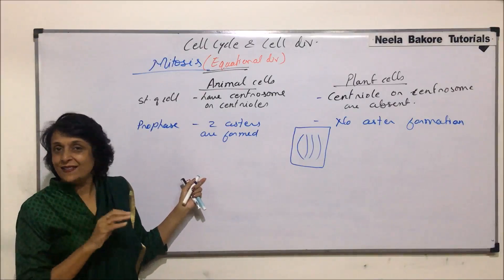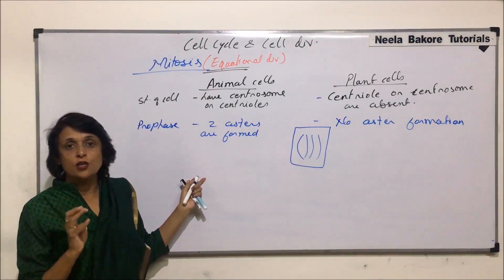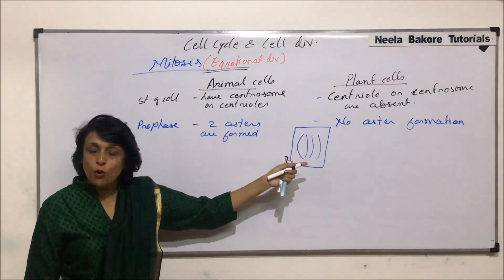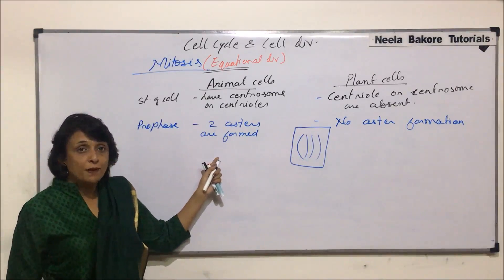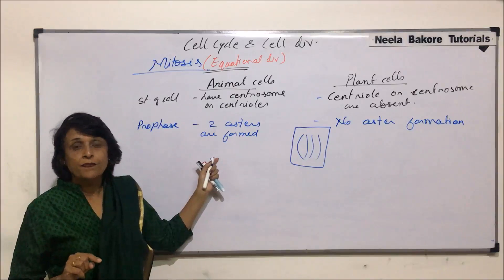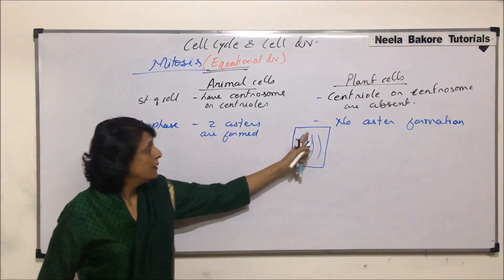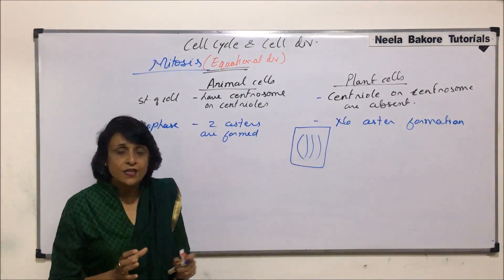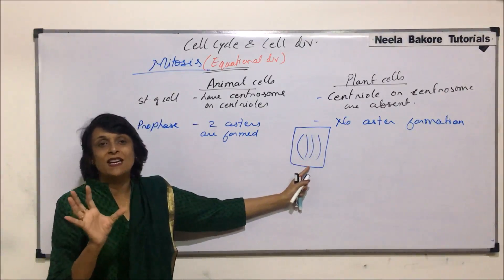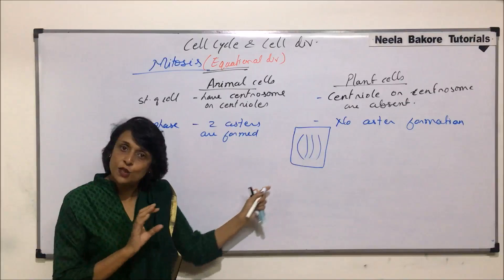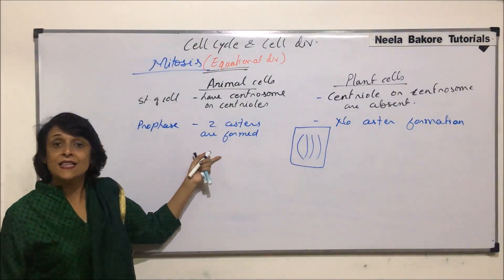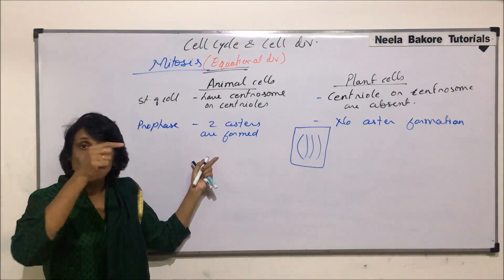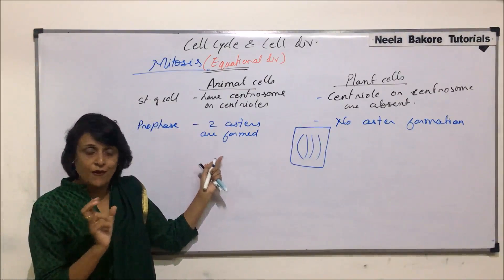In prophase, the main common events are membrane dissociation and chromatin fiber condensation. The difference lies in aster formation: in animal cells, a spindle apparatus with two asters and spindle fibers is formed, whereas in plant cells there is no spindle apparatus — only the spindle fibers are seen.